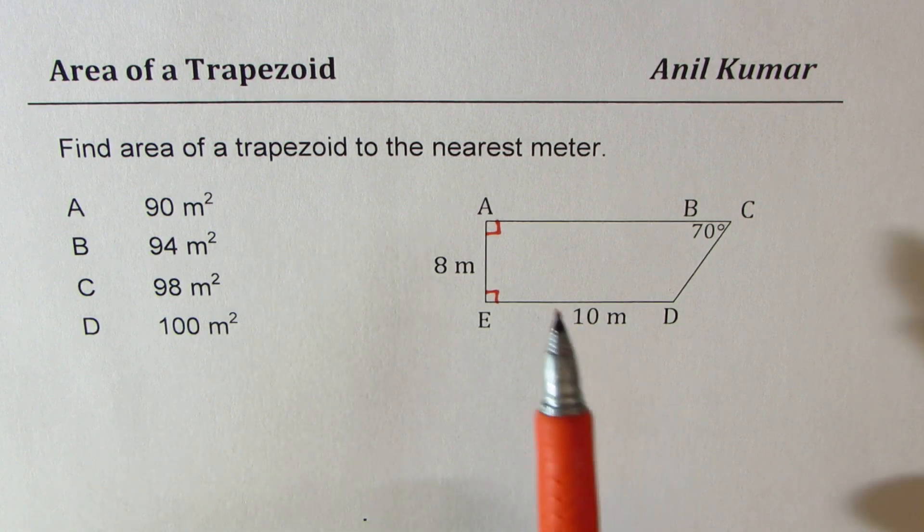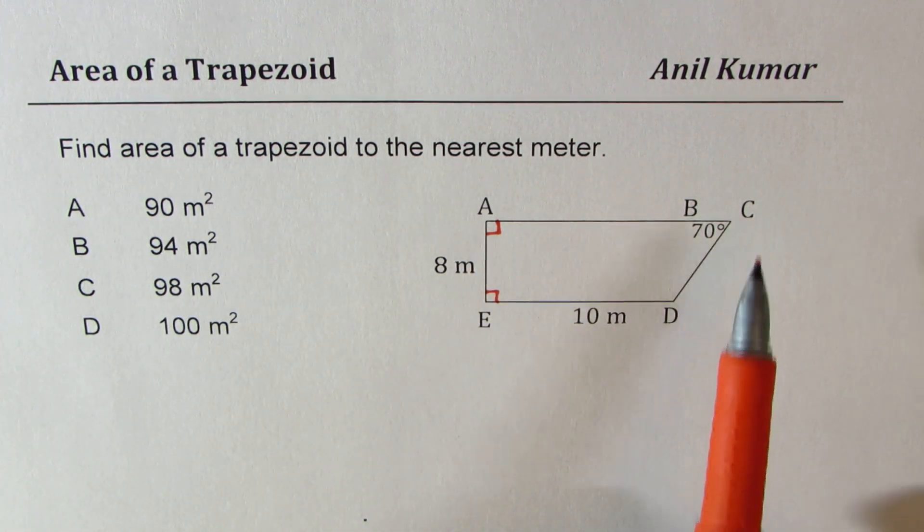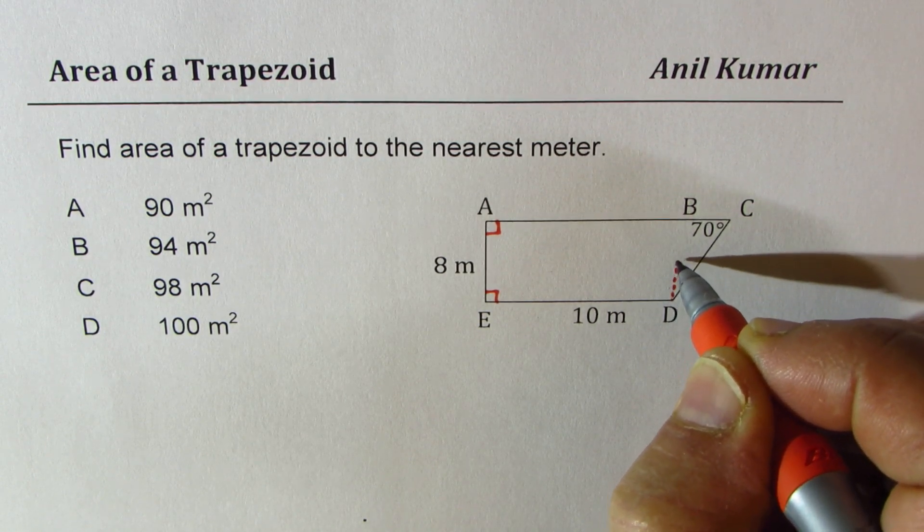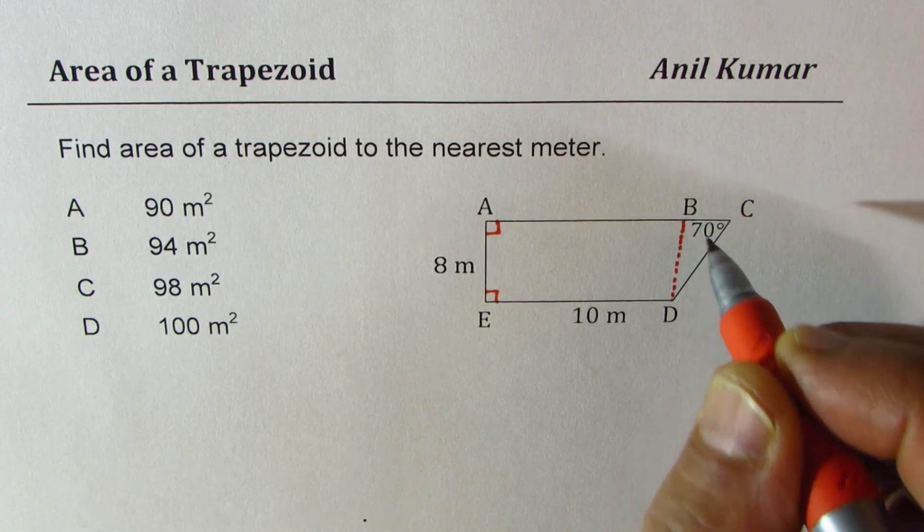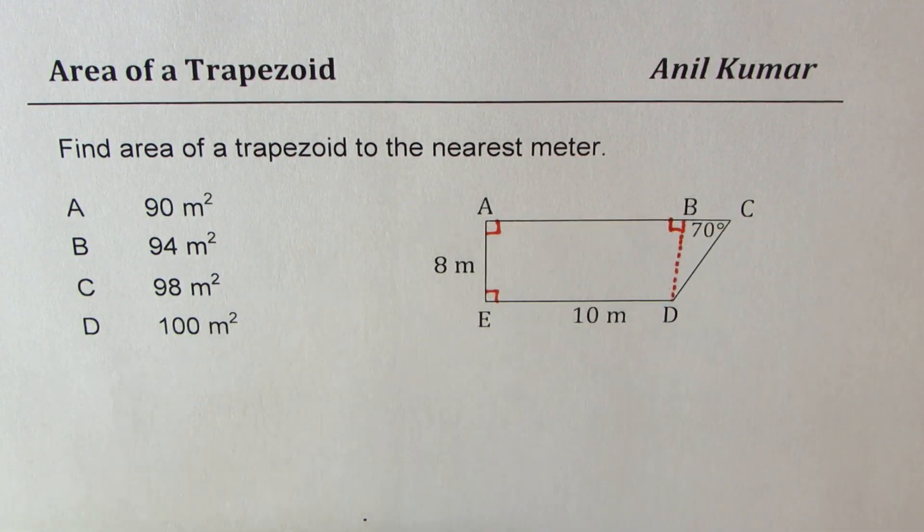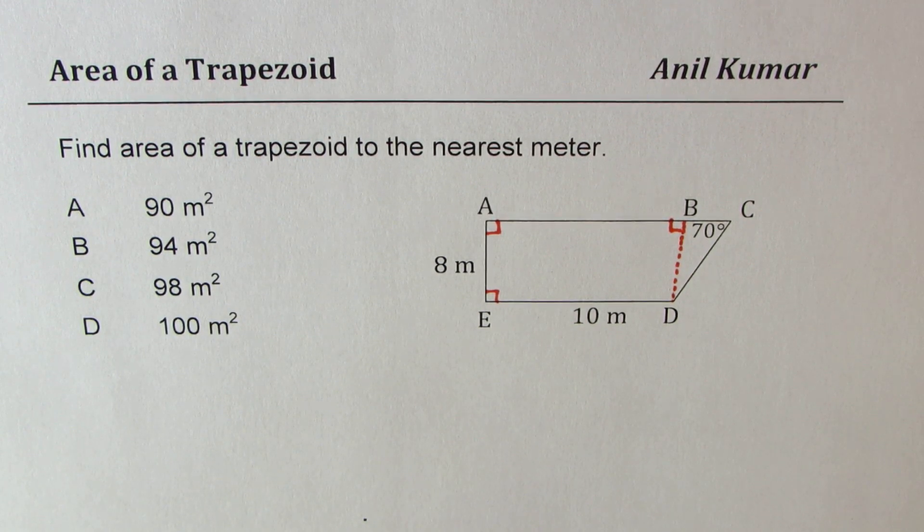Now we really don't know the length AC. To find this length, let me drop a perpendicular from D to AC. Let it touch at V. So if that is the perpendicular, then we are dividing the shape into one rectangle and a triangle.